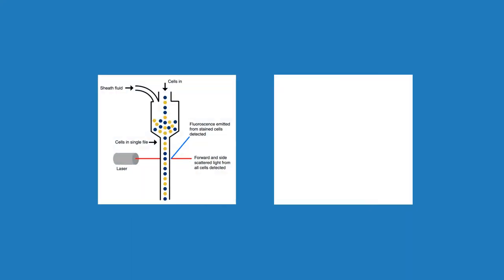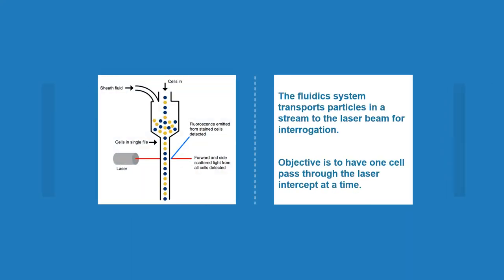The fluidics system transports particles in a stream to the laser beam for interrogation. The arrangement processes are important so that the liquid stream can pass in single file through the light for sensing.